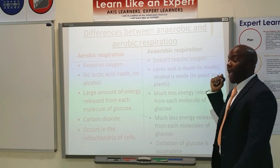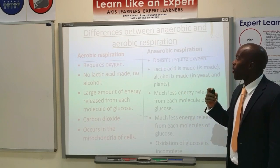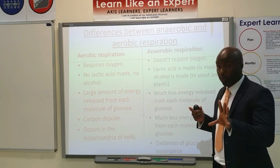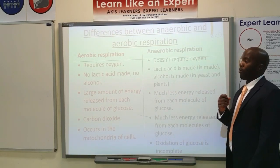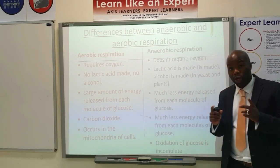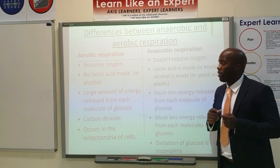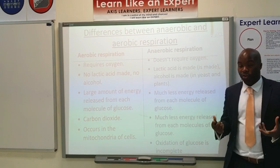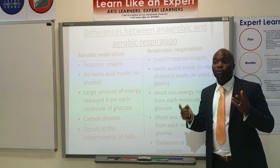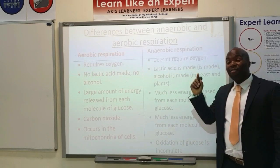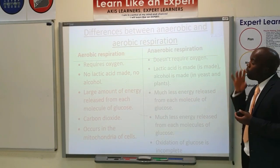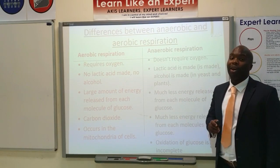Comparing aerobic and anaerobic respiration: aerobic respiration requires oxygen, whereas anaerobic respiration does not. Lactic acid is produced during anaerobic respiration in humans but not during aerobic respiration. Large amounts of energy are released by aerobic respiration, whereas much less energy is released per molecule of glucose in anaerobic respiration, making it less efficient. Also note that carbon dioxide is produced in anaerobic respiration in yeast but not in anaerobic respiration in humans. Pause the video and make notes on these key differences.